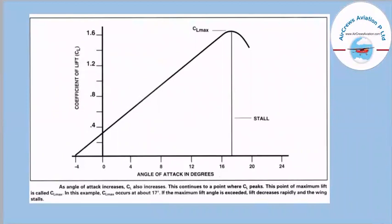The graph between coefficient of lift (CL) and angle of attack in degrees shows that as angle of attack increases, the coefficient of lift also increases. This continues to the point where CL peaks — this maximum is called CL max. In this example, CL max occurs at about 17 degrees. If the angle of attack is increased beyond CL max, lift decreases rapidly and the wing stalls. The aircraft wing should not exceed that critical angle of attack.